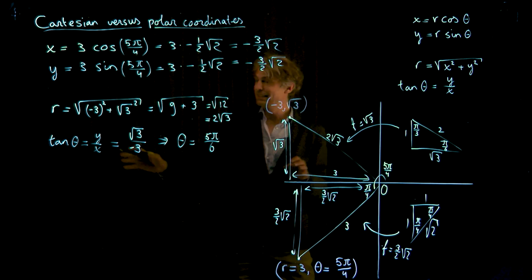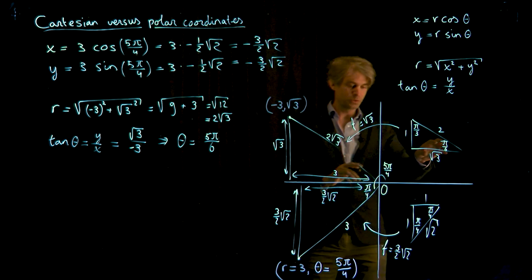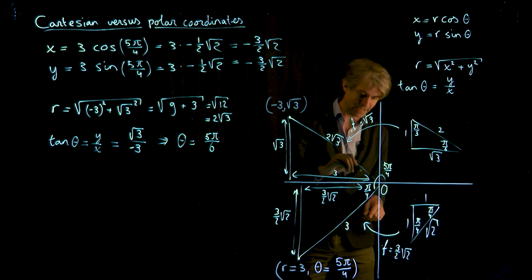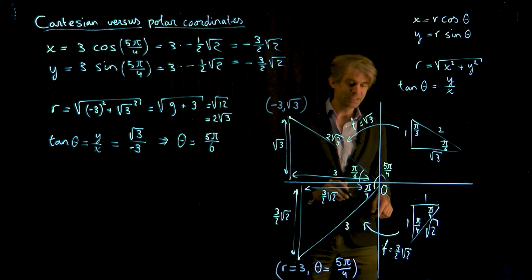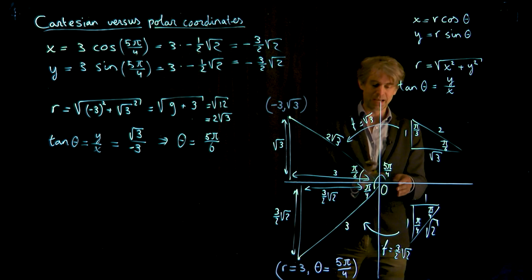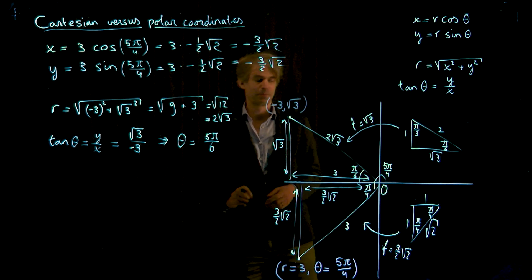Which is indeed exactly the r that we got here after our calculation. And then of course this angle here is that angle. This is pi over 6. But that means that of course the theta will be pi minus pi over 6, which is the 5 pi over 6. So there you go.